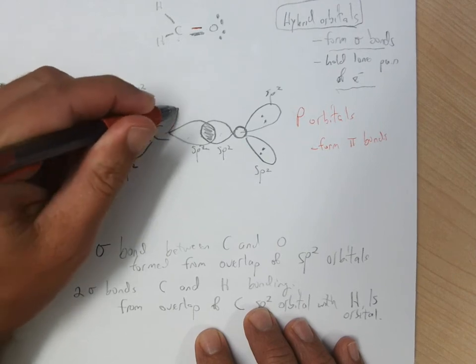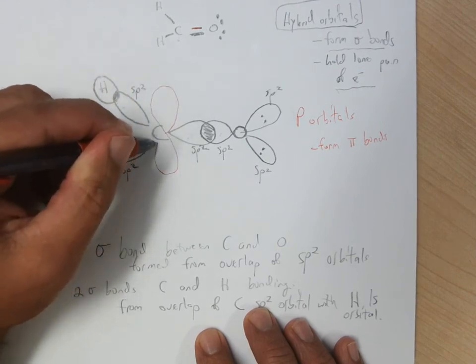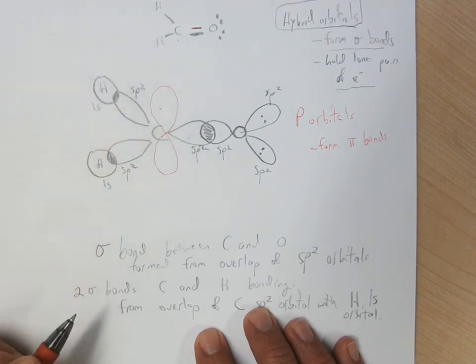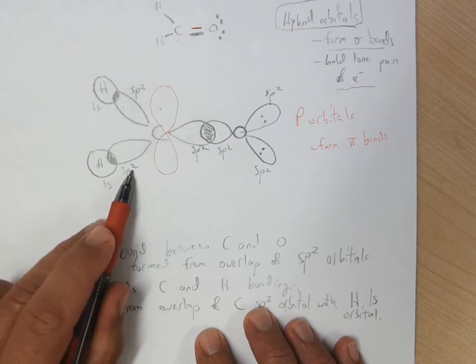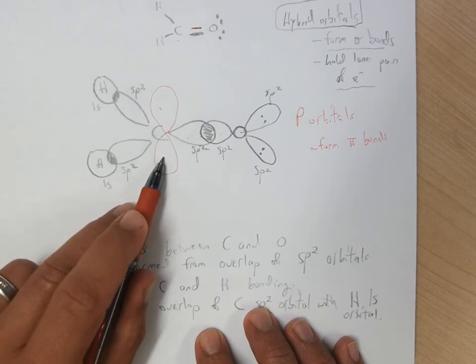So perpendicular to the plane of the triangle, you've got a p-orbital on the carbon, because we've used two of the p-orbitals to form the hybrids, we still have one left over,